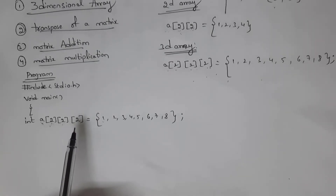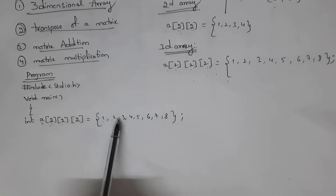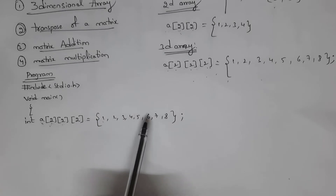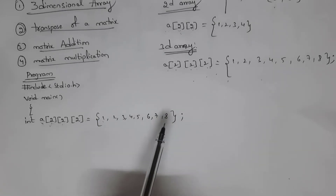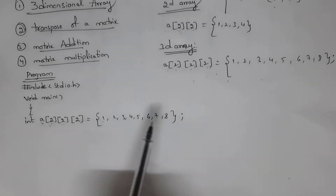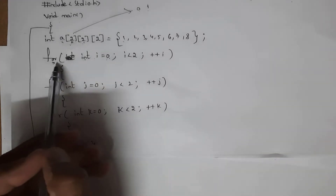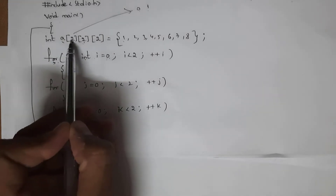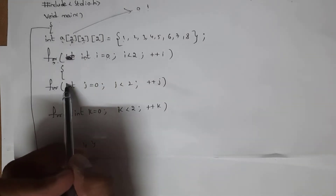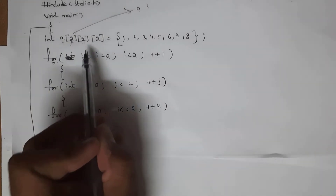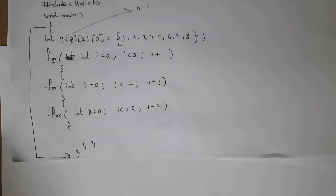2x4 and 4x2 — total I can store eight elements in this three-dimensional array. Let the eight elements be 1, 2, 3, 4, 5, 6, 7, 8. I want to print output along with index numbers, so for that purpose I took three for loops. The first for loop is for the first dimension, the second for loop is for the second dimension, and the third for loop is for the third dimension.